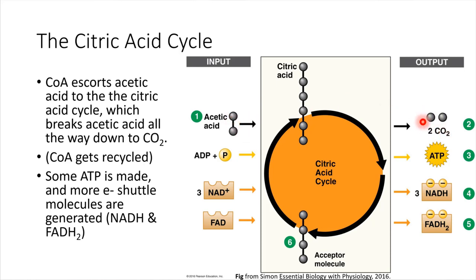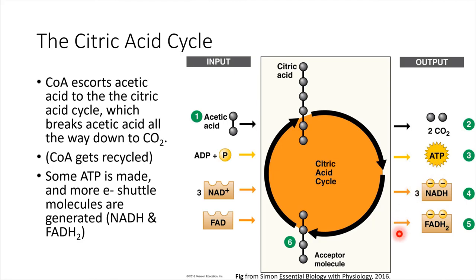We also make some ATP from this cycle. And perhaps even more importantly, we make quite a few electron shuttle molecules — NADH and also FADH₂ — both of which are electron shuttle molecules. What do those shuttle molecules do? We haven't gotten to that yet. So far we've just been noting that we generate electron shuttle molecules. Where do these electrons end up going? Where do they get shuttled to? Let's continue on into the next stage.